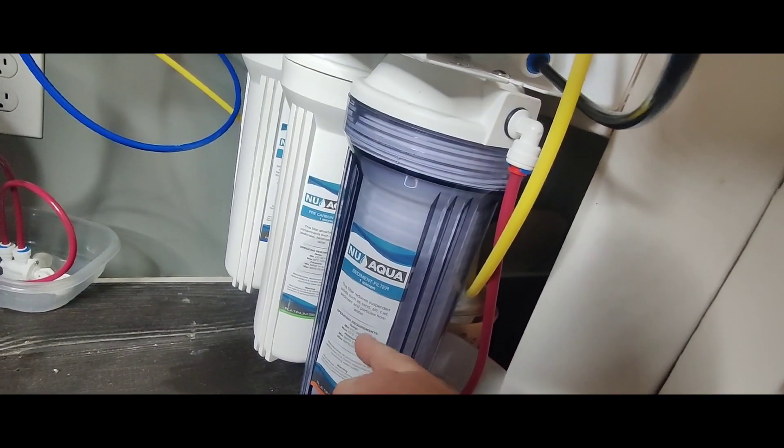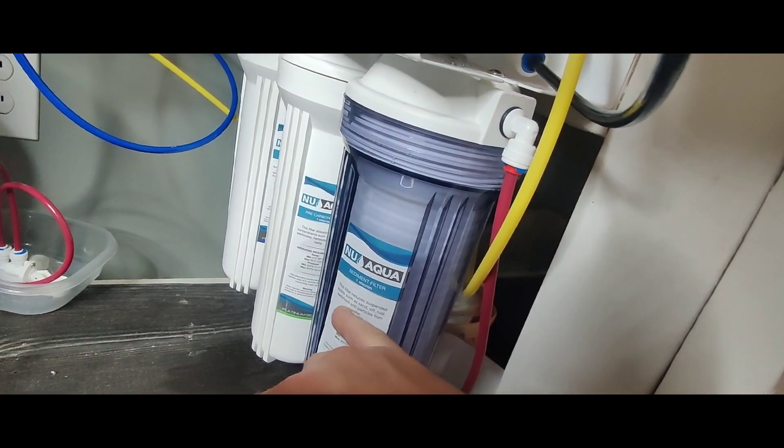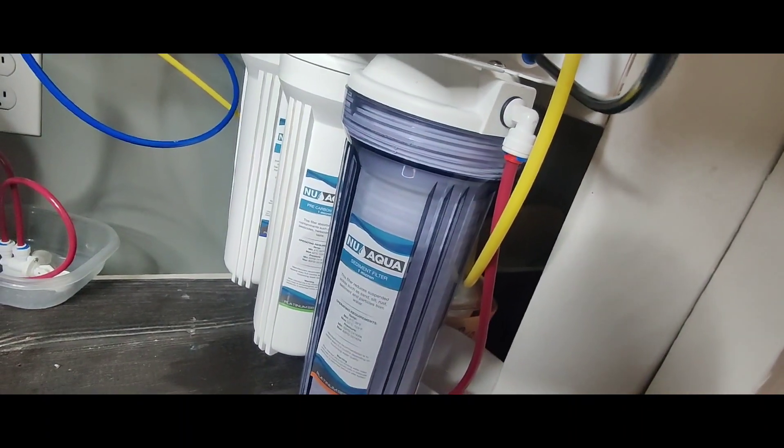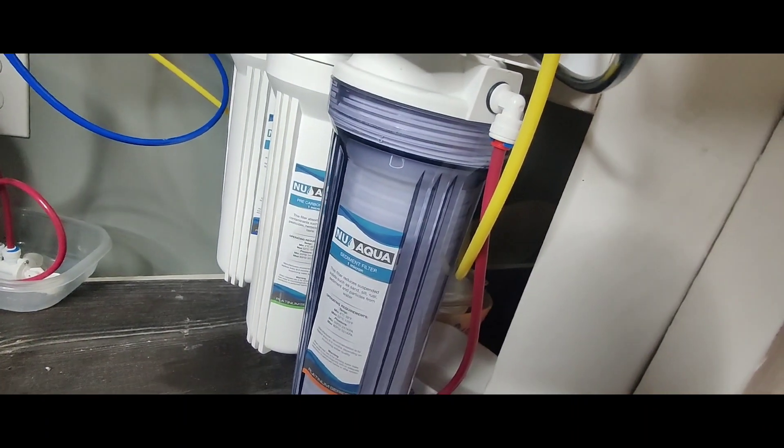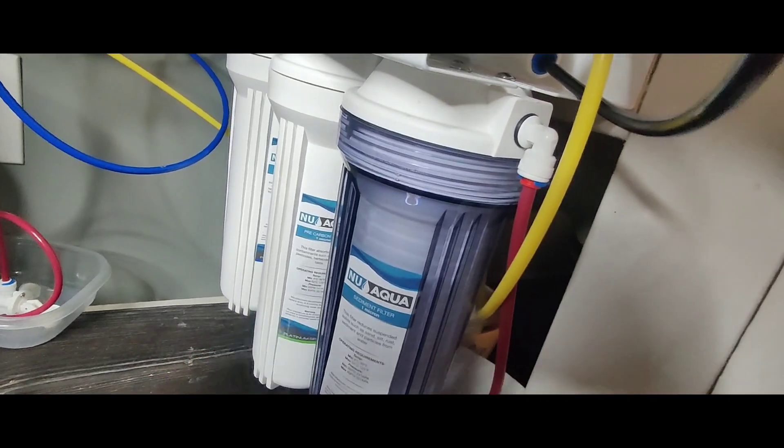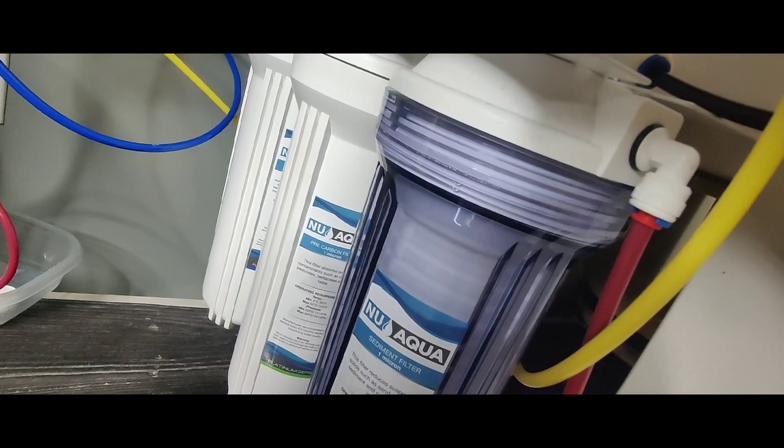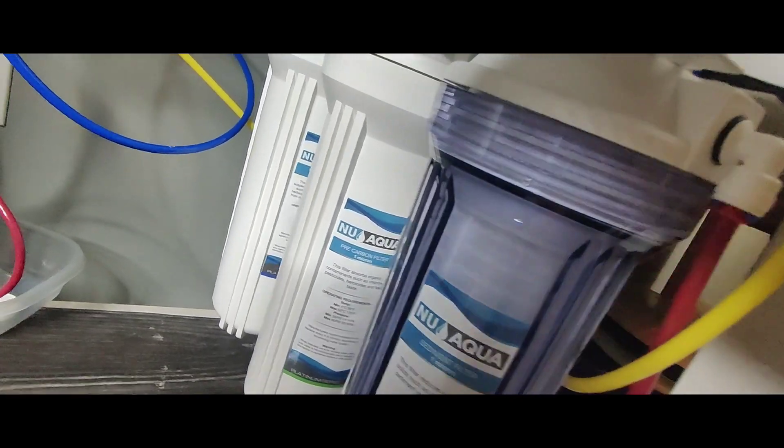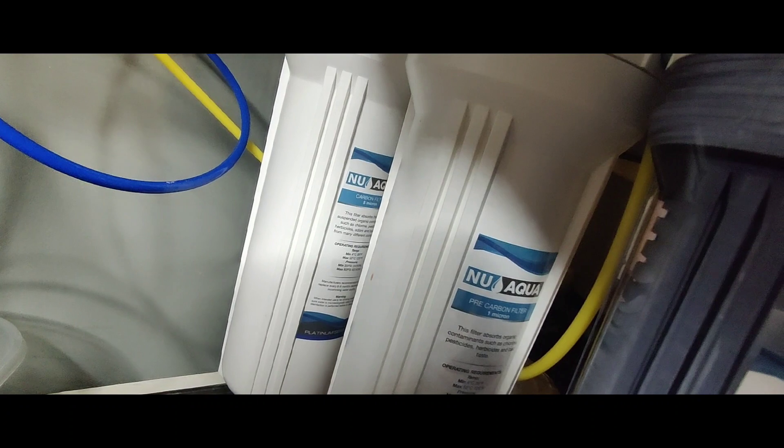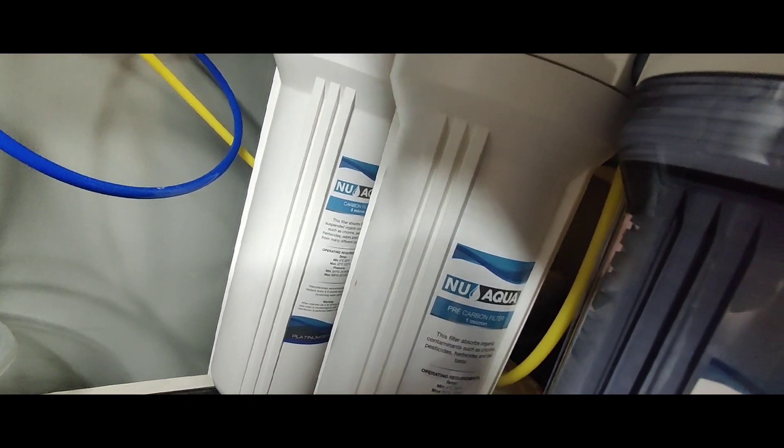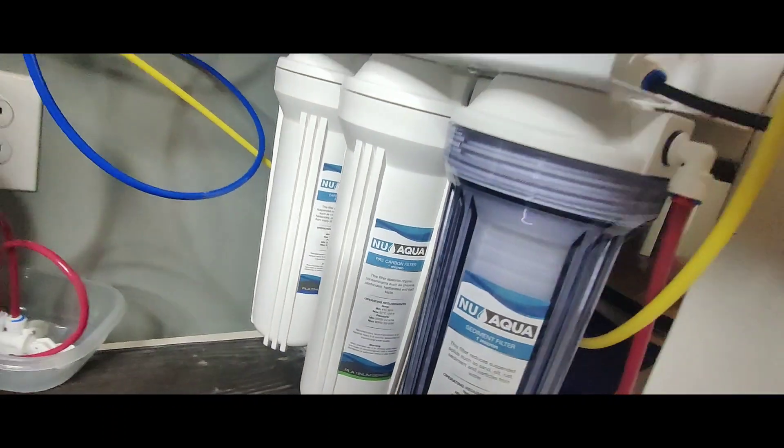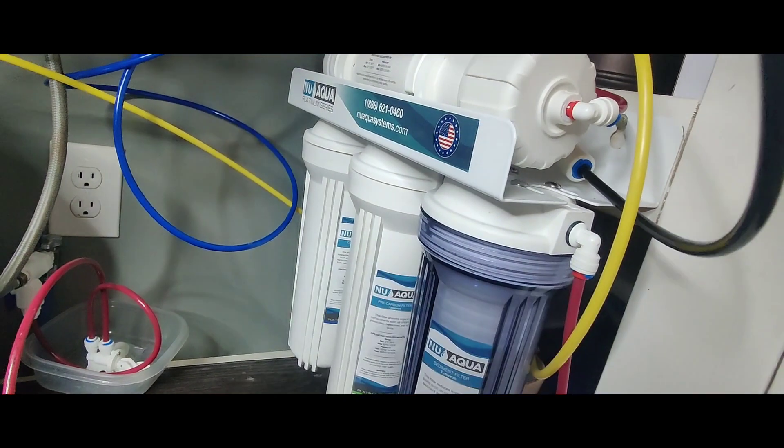The sediment filter removes suspended solids such as sand, silt, rust, sediment, and particles from the water. This pre-carbon filter absorbs organic contaminants such as chlorine, pesticides, herbicides, and bad tastes. And the other one removes organic contaminants such as chlorine. It looks like it does the same. So, it's like kind of a double carbon filter.